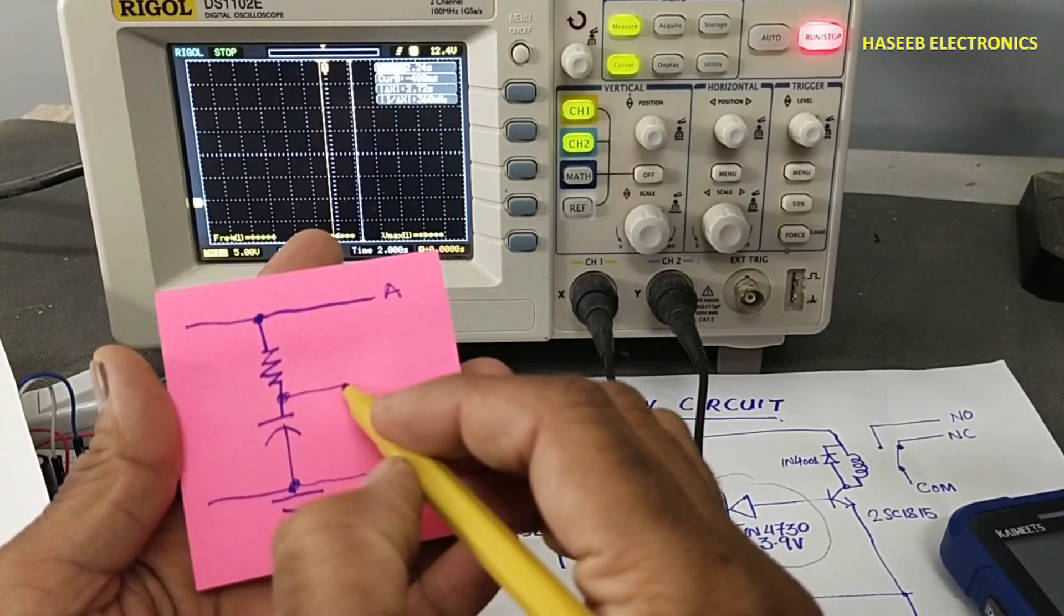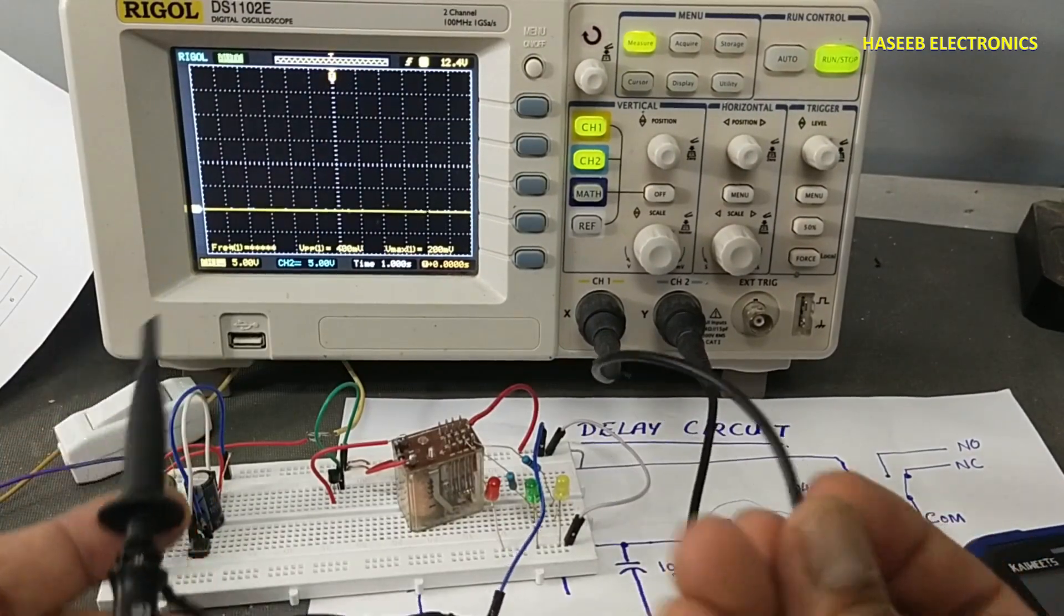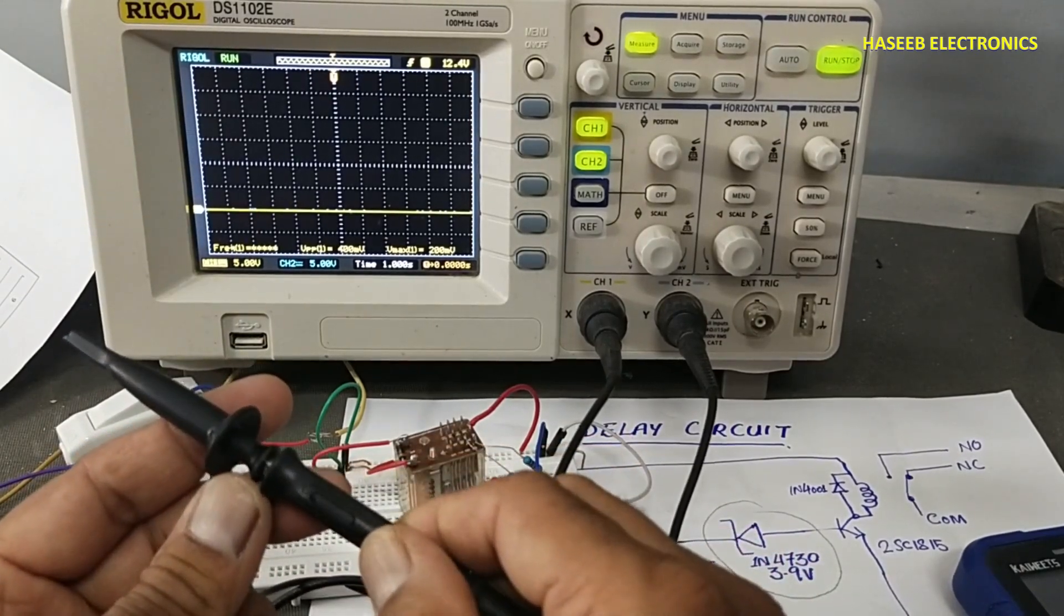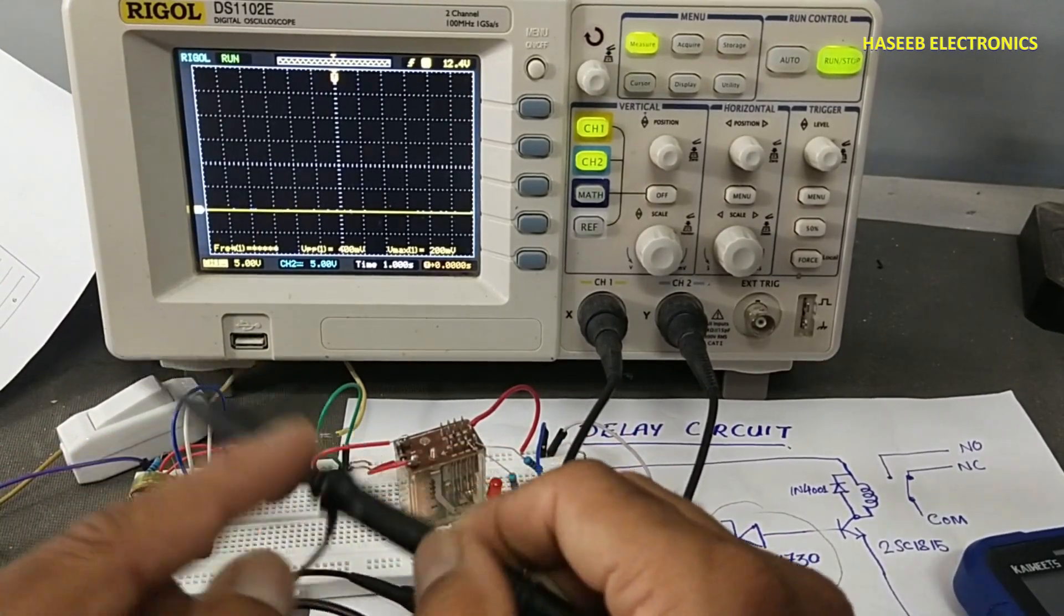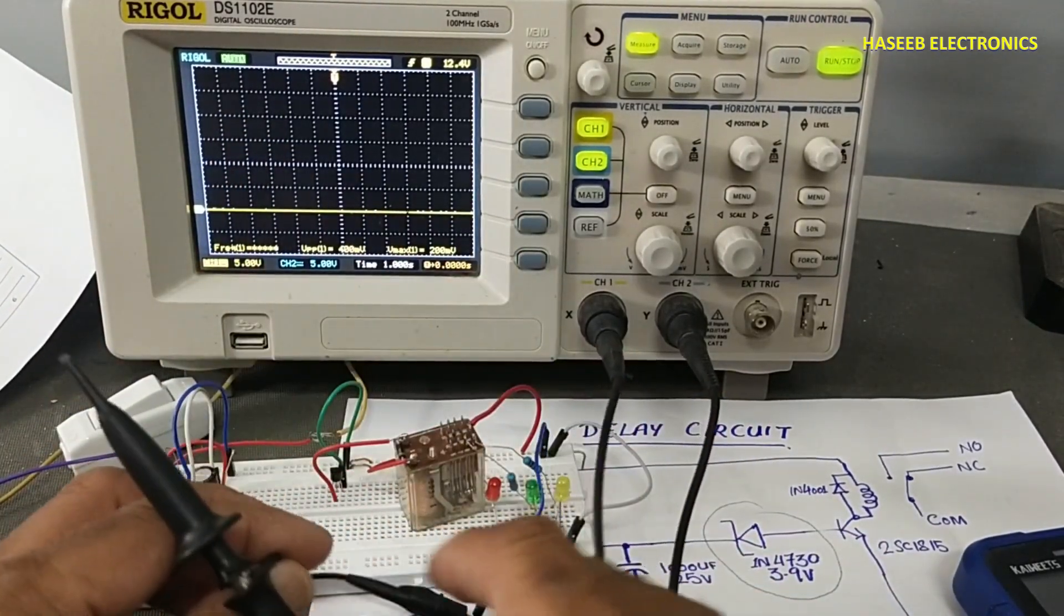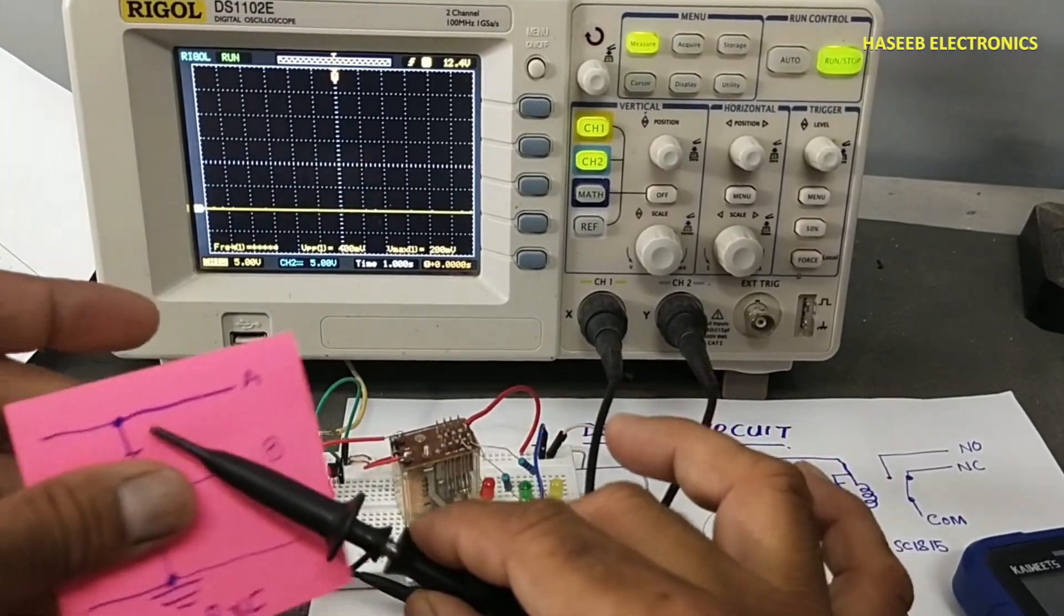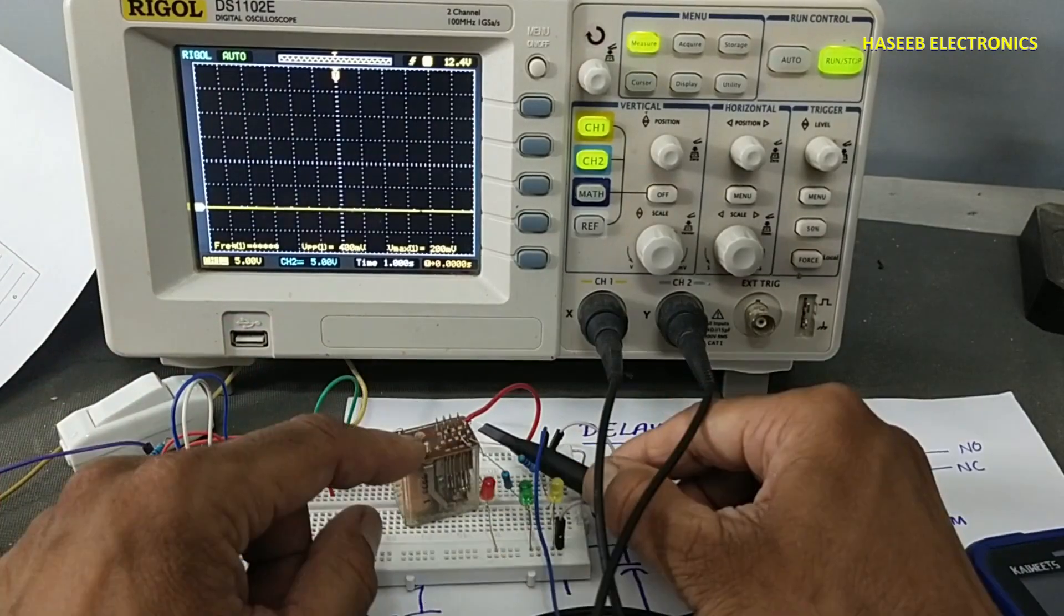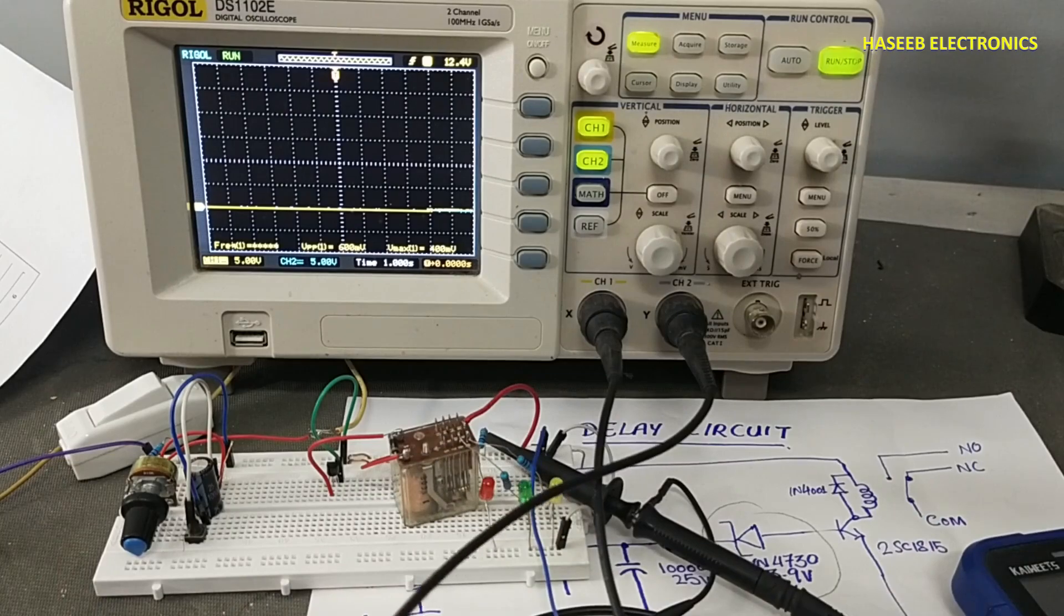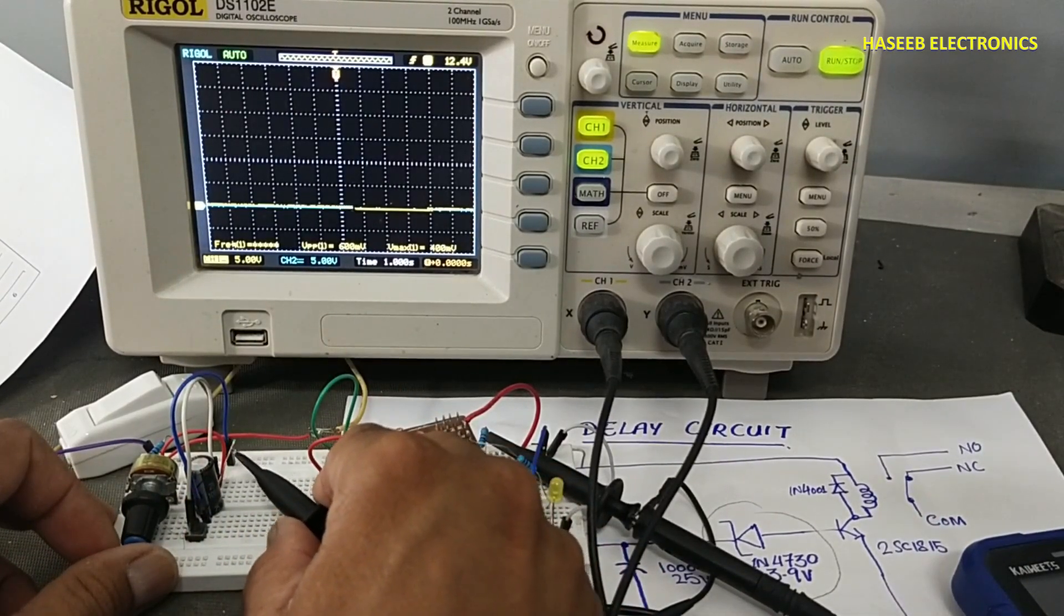Channel B we will connect here. This is channel one, we will set it to 1x or 10x depending on the amplitude of the voltage, and we will connect channel one to our supply line. Channel B or channel number two we will connect across this capacitor.